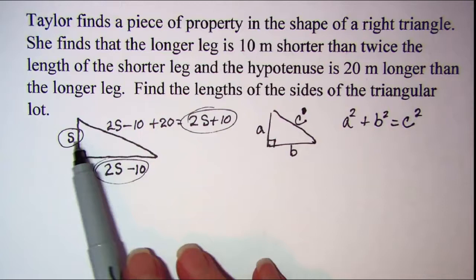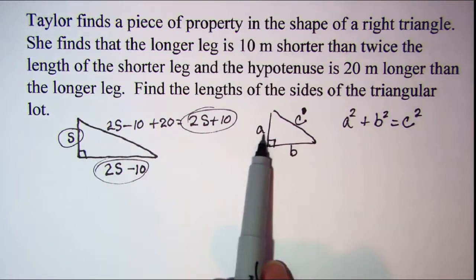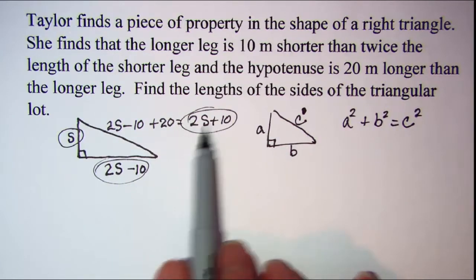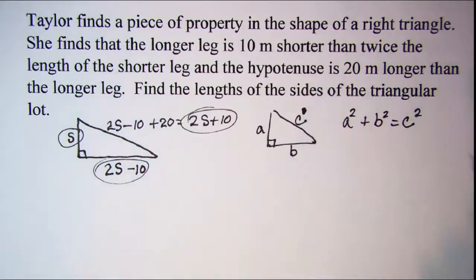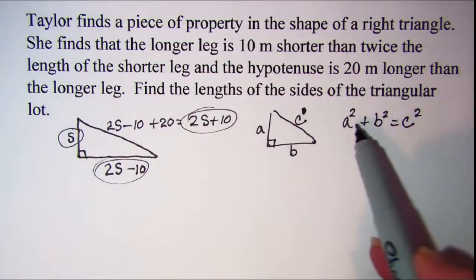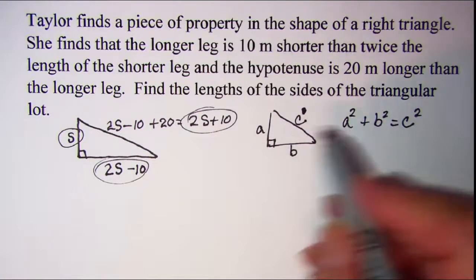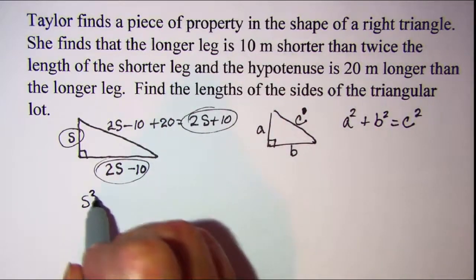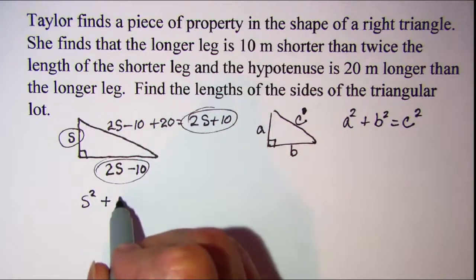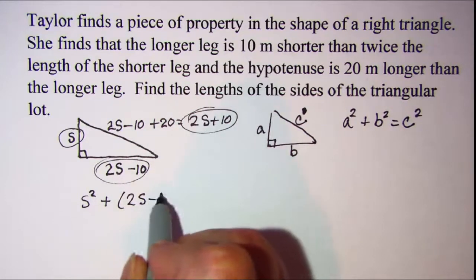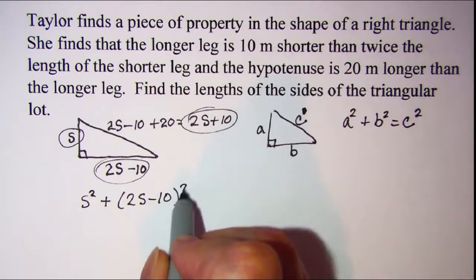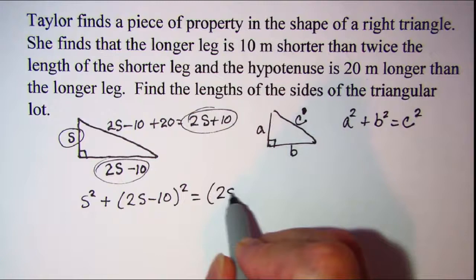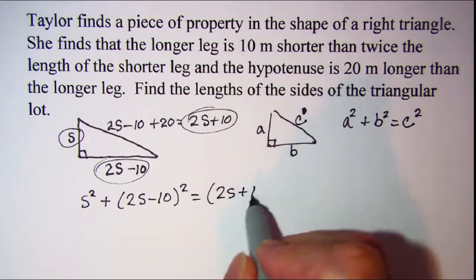So I'll just go ahead and let s be my a, and 2s minus 10 be my b, and 2s plus 10 will be my c. And I'll fill those expressions into the Pythagorean theorem here. So I have s squared plus 2s minus 10 squared is equal to my hypotenuse squared, 2s plus 10 squared.